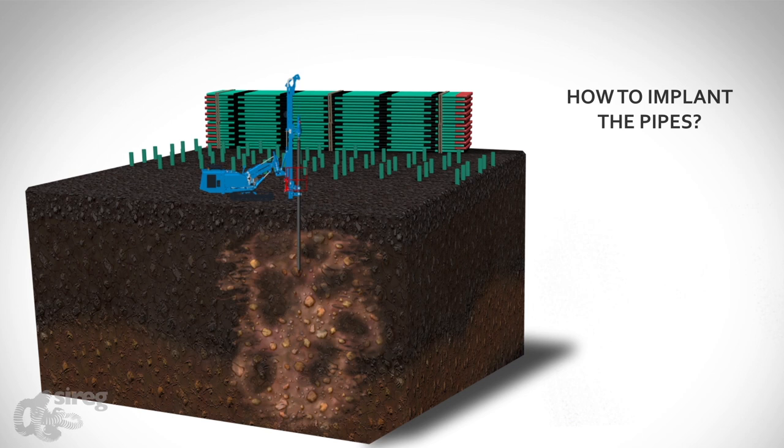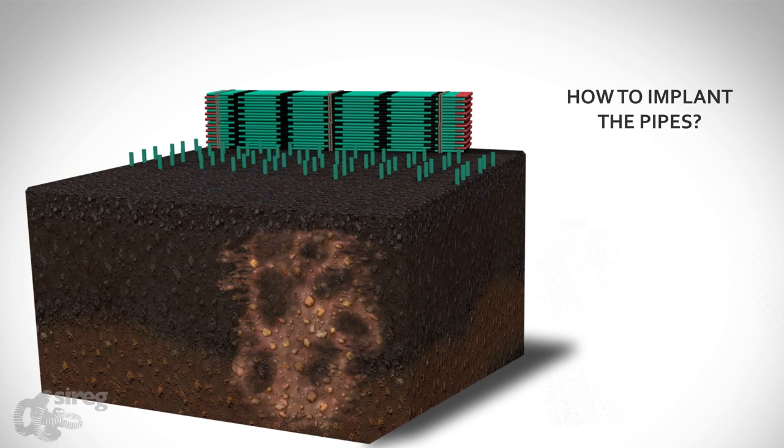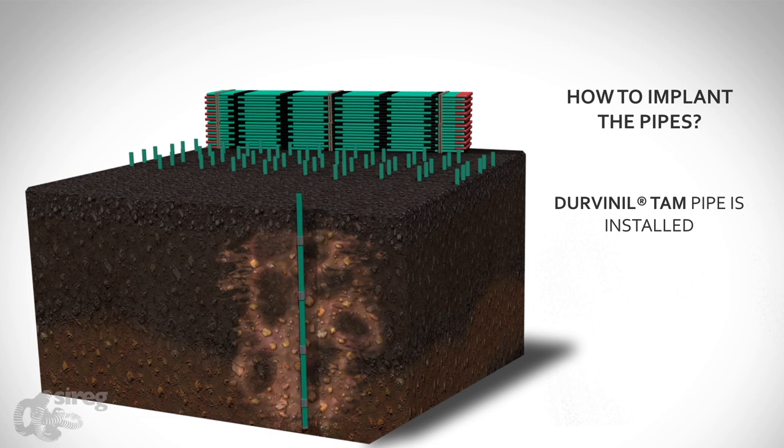How to implant the pipes. Depending on the soil's characteristics and the project's design, vertical or inclined boreholes are made by a drilling rig. The durovinial TAM pipes are then installed in the boreholes.